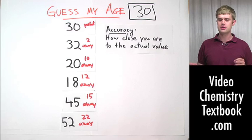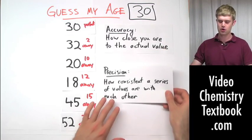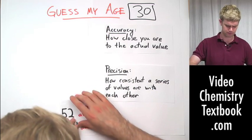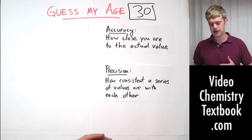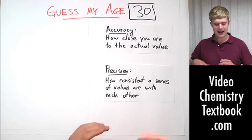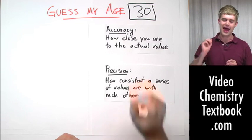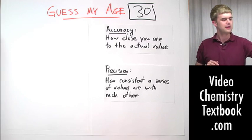Now, there's another term that's not going to win you any prizes at a state fair, and that's called precision. But it's just as important. So, precision is about how consistent a series of values are with each other, and it has nothing to do with whether those values are right, whether they're accurate. It doesn't matter how close they are to the actual value. Let me show you what I mean.